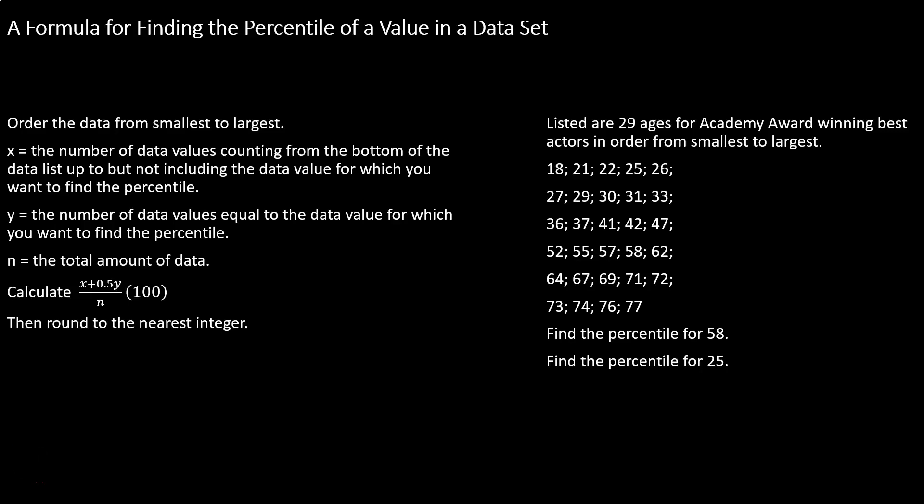If you're looking at a data set and you want to pick out a data value and identify what percentile that data value would represent, we have a formula for that. This formula looks like this: x plus 0.5y divided by n times 100. To use this formula we need to find three things.